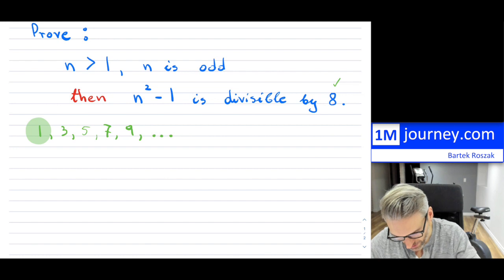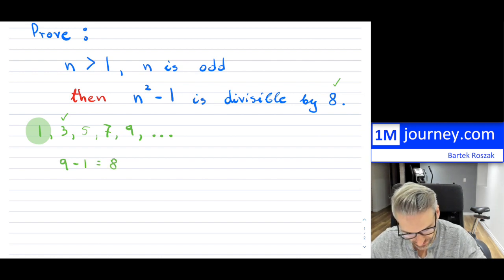Well, if we take 3, for instance, and we square it, we're going to get 9. And 9 minus 1 is going to be equal to 8. Well, as you can see, 8 is clearly divisible by 8, so that is nice.